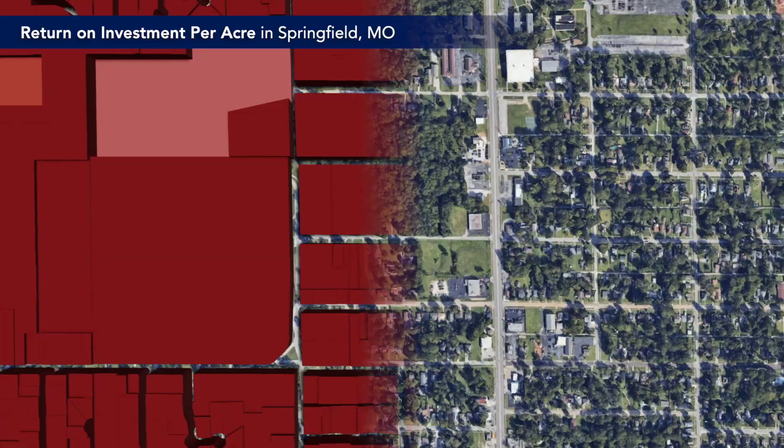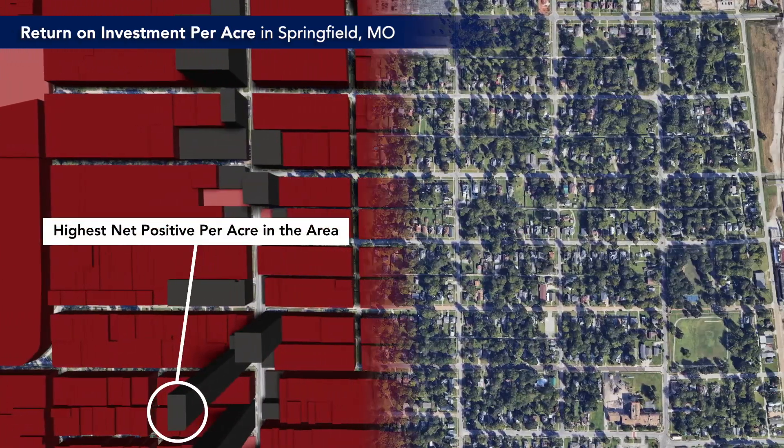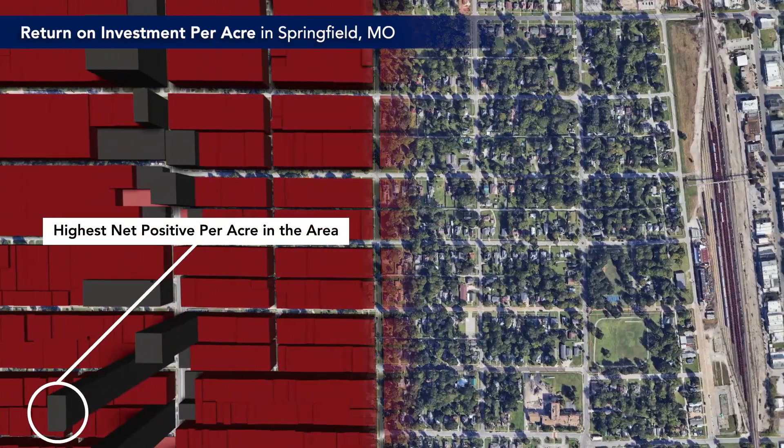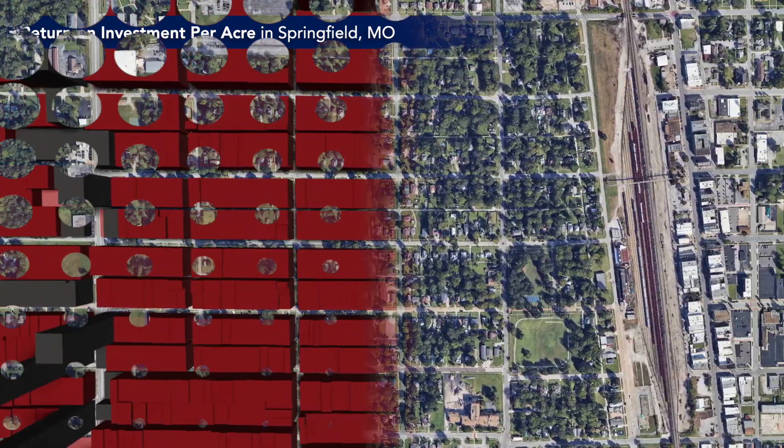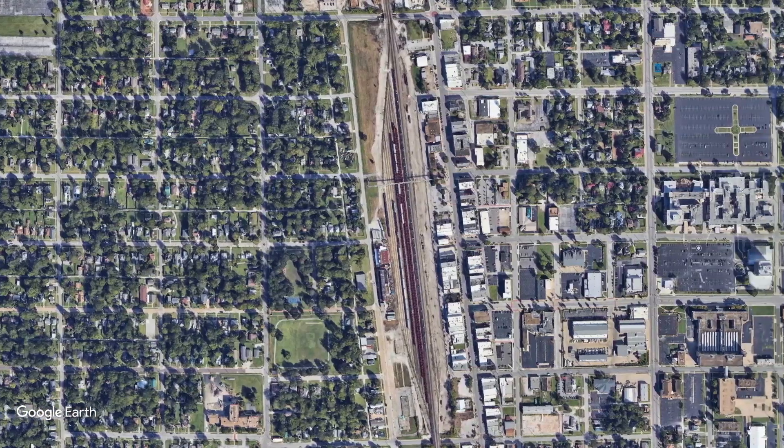Our cities have a problem — they're growing in financially unsustainable patterns that are driving them broke, because decision-makers can't see the data that should be driving their decisions. Usually, data is presented in a way that is too complex for a non-expert to understand. In the vast majority of our projects, the problem isn't a lack of data — it's a lack of understanding the data.